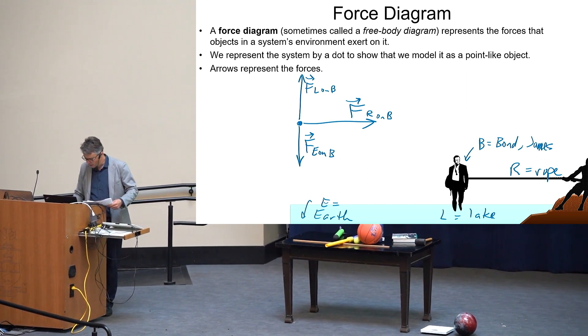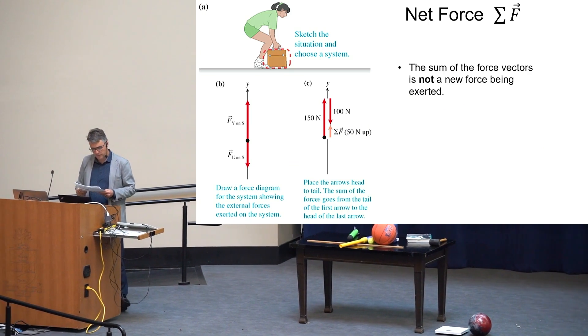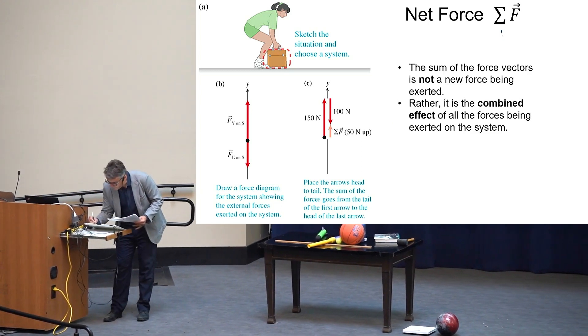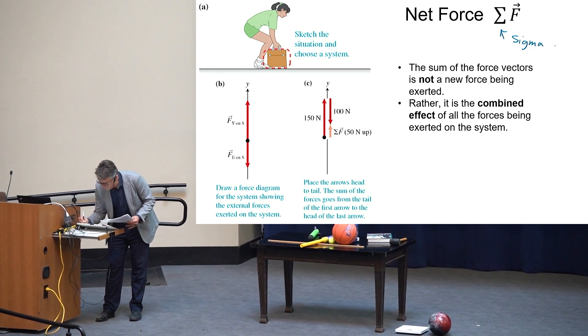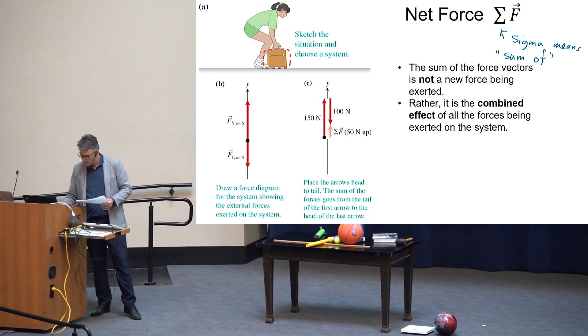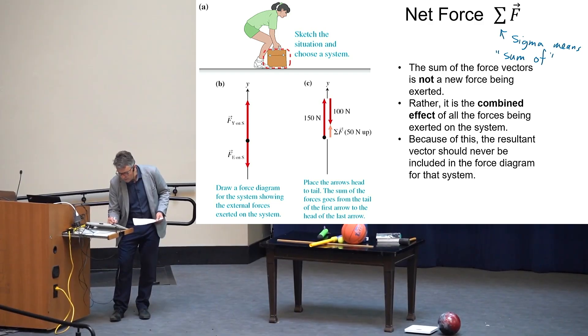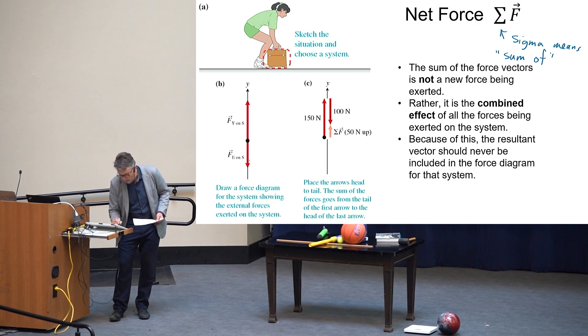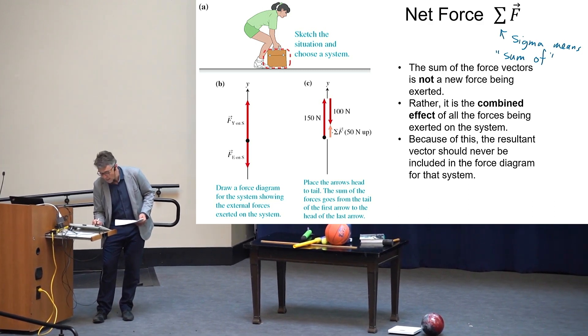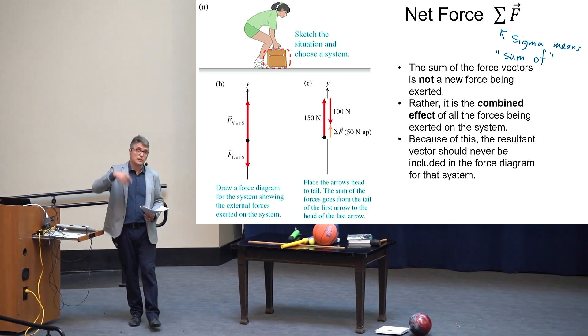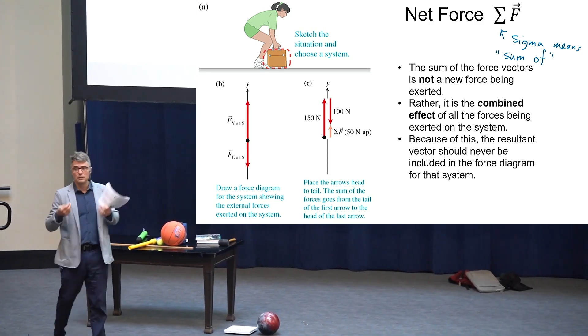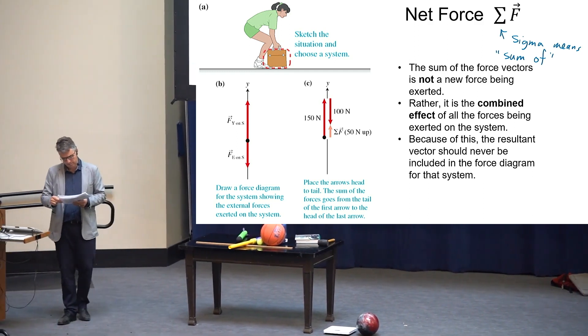When we draw a force diagram, we represent the object or the system as a particle. The tail goes on the particle and then we draw the force emanating away from the particle and then we usually label it. If we go back to this James Bond guy, I would draw a force diagram. I would draw a dot and then I would draw all the forces acting on James Bond. The force of the rope on James Bond, the lake presses upwards so there's a force of the lake on Bond, and then gravity. The force of the earth on Bond.